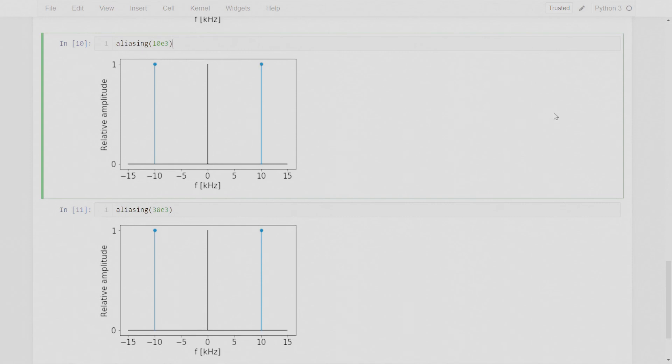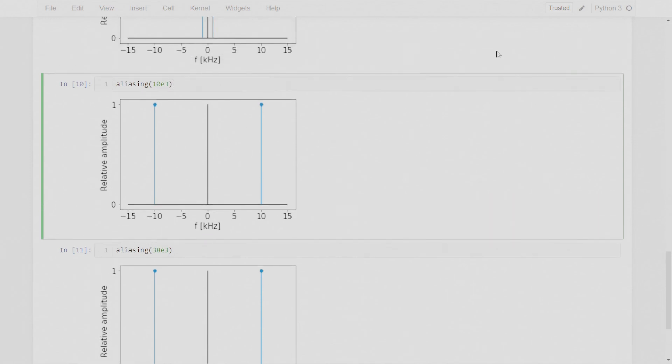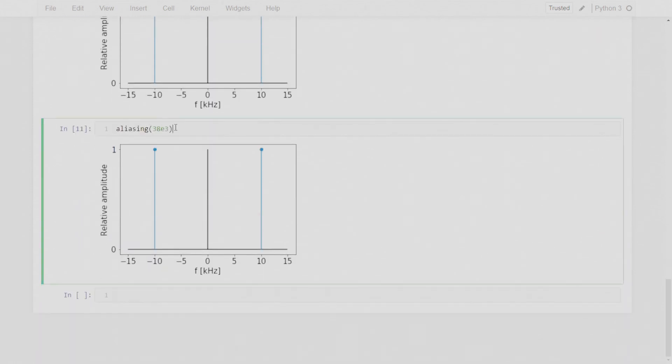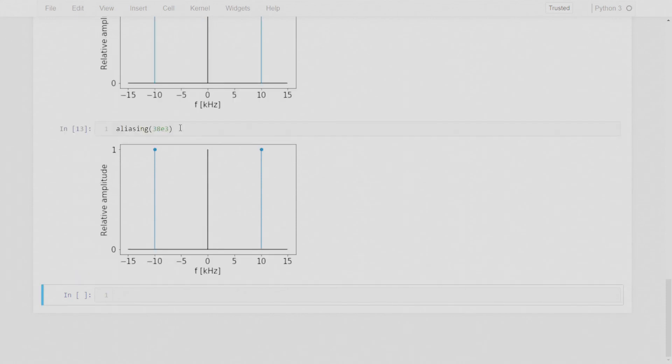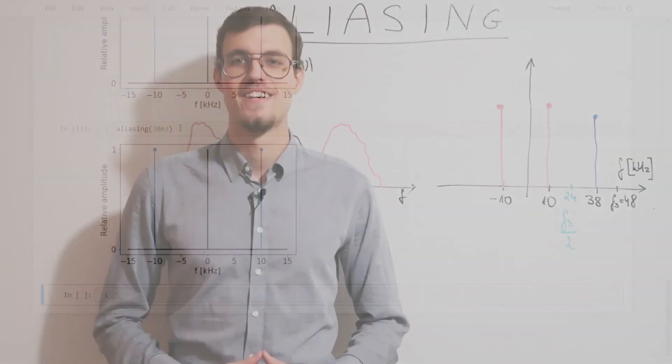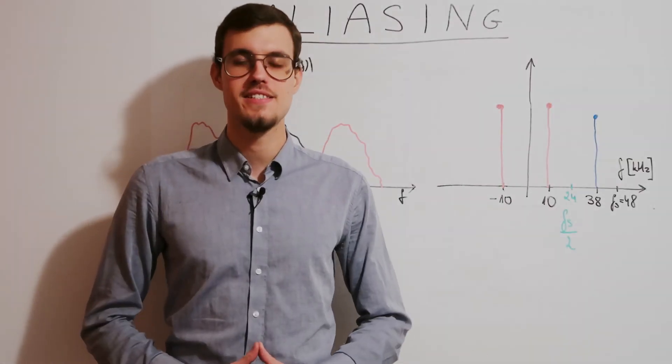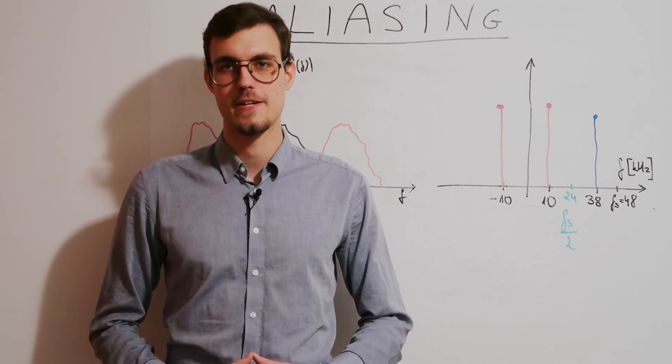Although these are completely different frequencies and 38 kilohertz is in the inaudible range. So it all comes down to too low sampling rate for these conditions. Once again 10 kilohertz and 38 kilohertz, it sounds the same. That's the power of aliasing.